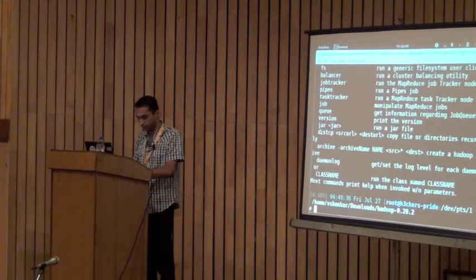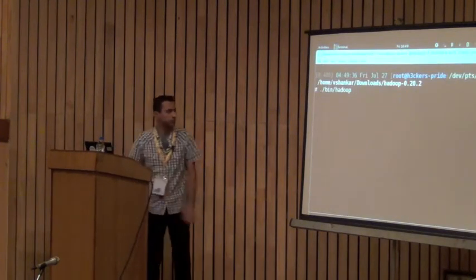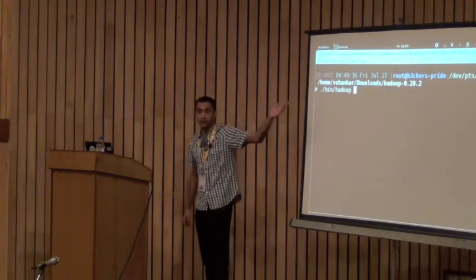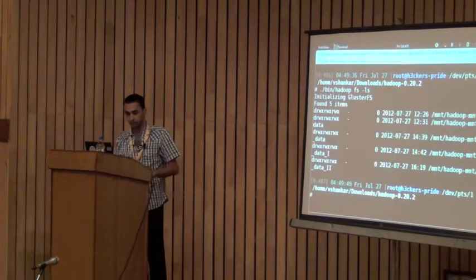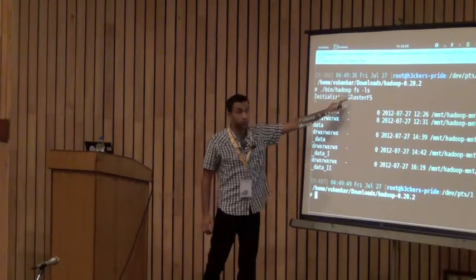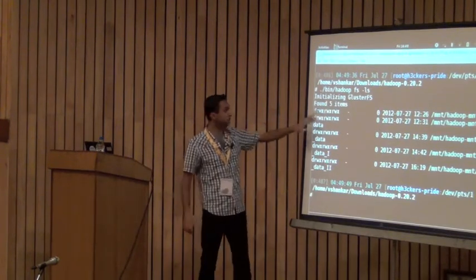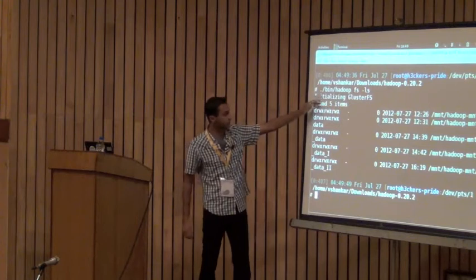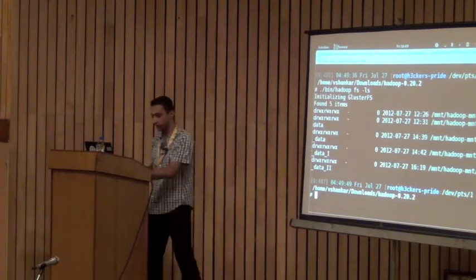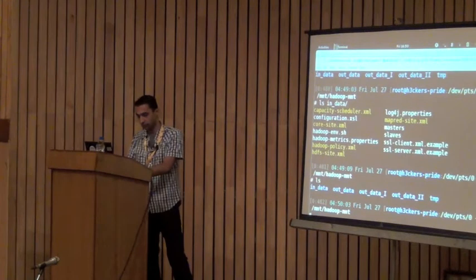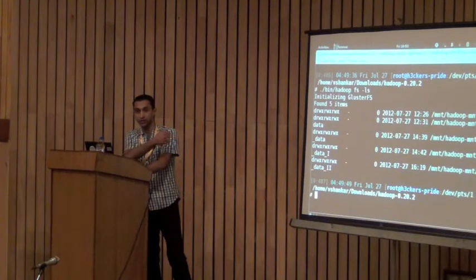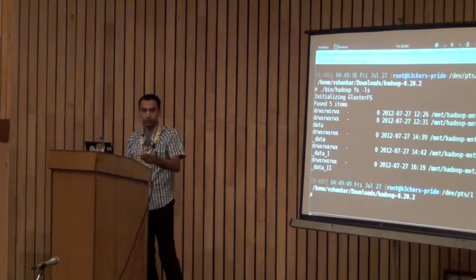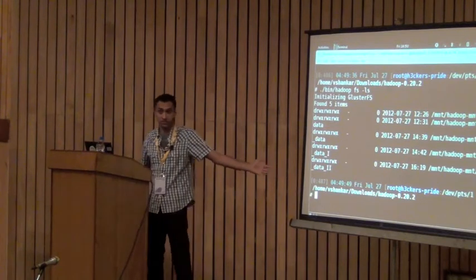Before running a job, there is the GlusterFS Hadoop shell. From this shell you can run a MapReduce job or a normal filesystem operation. Let me run a normal ls. As you see — because I have configured GlusterFS in core-site.xml — it says 'initializing GlusterFS' and then dumps all the directory contents. This is the way to test whether your configuration is correct.